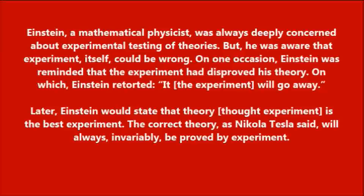Einstein, who was a mathematical physicist, was always deeply concerned about experimental testing of theories. But he was aware that experiment itself could be wrong. On one occasion, Einstein was reminded that experiment had disproved his theory, on which Einstein retorted: 'It — the experiment — will go away.' Later, Einstein would state that theory and thought experiment are the best experiment. The correct theory, as Nikola Tesla said, will always, invariably, be proved by experiment.